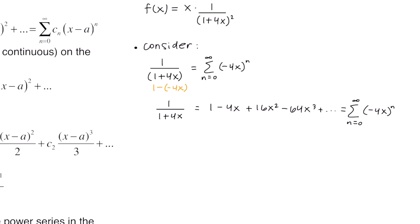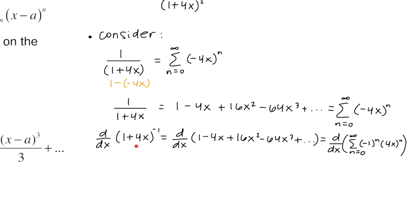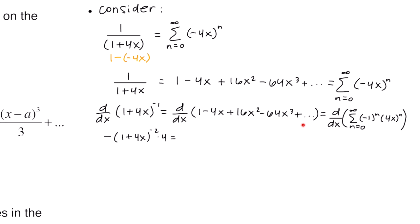Because this part of the function has 1 over 1 plus 4x to the second power, I want to take the derivative of this. I rewrite it as 1 plus 4x to the negative 1 and use the chain rule: move the negative 1 to the front, leave the inside the same, subtract 1 from the exponent, then times by the derivative of the inside. The derivative of 1 is 0, the derivative of negative 4x is negative 4. For the next term, bring 2 to the front leaving 2 times 16. On the next term, bring 3 to the front leaving 3 times 64x squared.